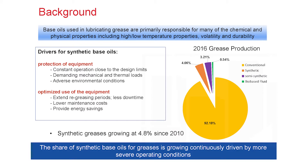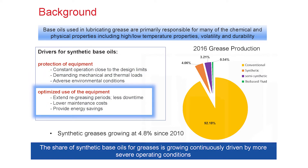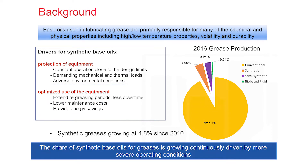There are basically two main drivers for the use of synthetic greases. One, protection of equipment, and two, optimized use of equipment. Protection means the grease allows the equipment to run at design limits from thermal and mechanical perspectives in adverse environmental conditions. Optimization means cost reduction by achieving higher energy efficiency and extending re-greasing times.